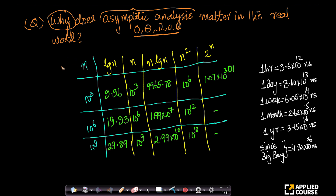Imagine I have a problem — this could be a problem of sorting, searching, whatever the problem is. We will see many problems as we progress through the course. Let us say the number of inputs to that problem is 10 power 3, which is 1000. Let us assume it is sorting just for simplicity. If we have to sort 1000 items versus 10 power 6 which is a million items, 10 power 9 which is a billion items.